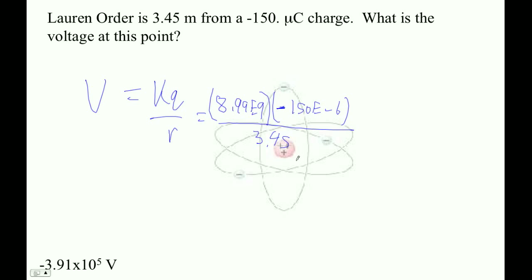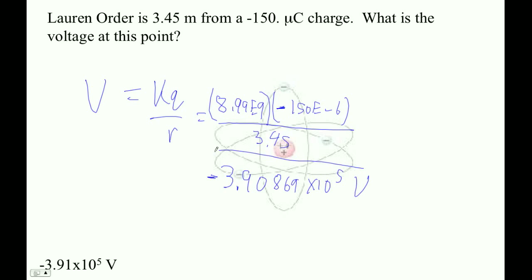Alright, let's see what we get. I should get a negative voltage because, of course — there we go. So I'm getting 3.90869 times 10 — this is negative 10 to the 1, 2, 3, 4, 5 volts.